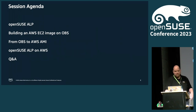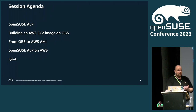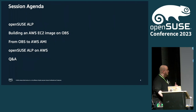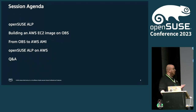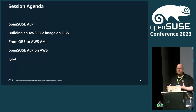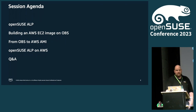I will start with a few words about ALP in general. Then, how an image for AWS can be built with OBS. Then, how we get an image from OBS to AWS as AMI. And then, about OpenSUSE ALP on AWS — does it work and how's the experience?